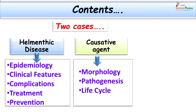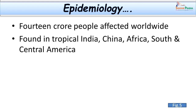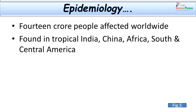Having discussed the cases, let us now learn about details of the disease as well as the parasite causing this infection. Coming to the epidemiology, 14 crore people all over the world are thought to be affected with this disease, out of which 8 crore are particularly affected by the most common parasite in the group, that is Wuchereria bancrofti. This disease is found in tropical regions including India, China, Africa, and South and Central America.